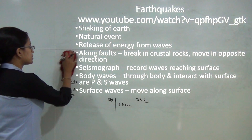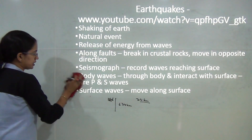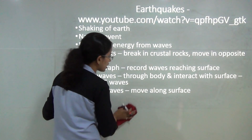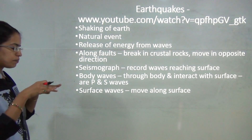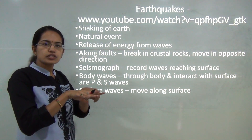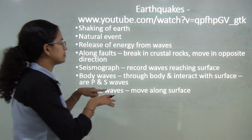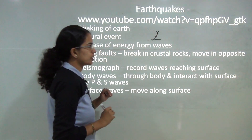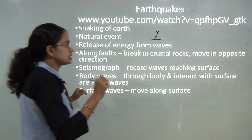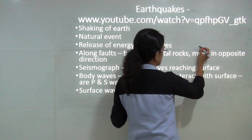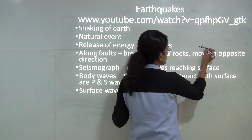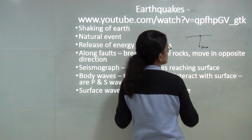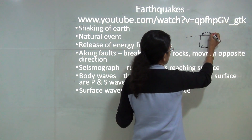The next topic is earthquakes. The shaking of the earth's surface leads to an earthquake, which is a completely natural event. It predominantly occurs along faults — wherever there is a break in the crustal rock surface. These earthquake waves originate from within the earth; the point where they originate is known as the focus, and the point directly above the focus that touches the surface is known as the epicenter.